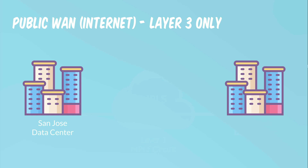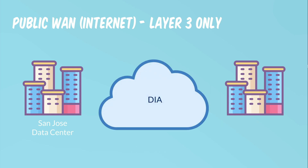The other item, on the other side of the spectrum, is the public WAN — and that is the internet. It's layer three only. When you go to your service provider and say you want a public WAN circuit, they can only sell it to you as a layer three circuit. And there are two categories within public WAN.